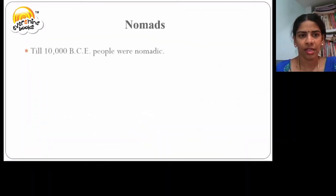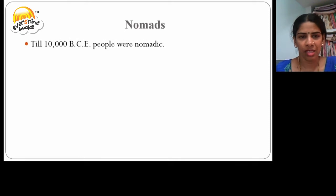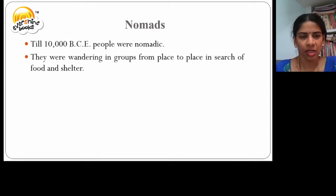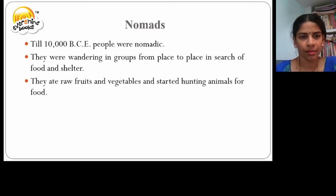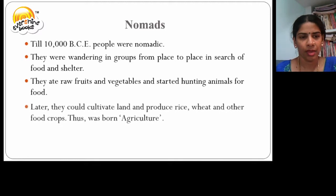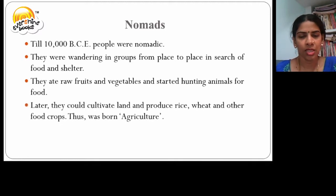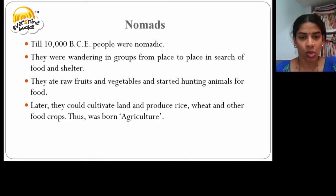Till 10,000 BCE, people were nomadic. They were wandering in groups from place to place in search of food and shelter. They ate raw fruits and vegetables and began hunting animals for food. Later, they could cultivate land and produce rice, wheat, and other food crops. Thus, agriculture was born.